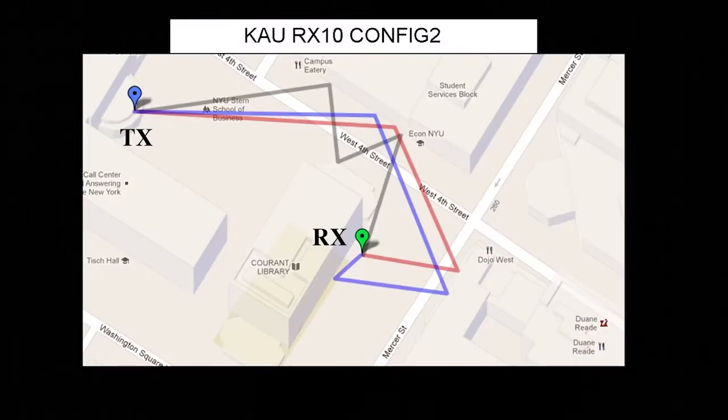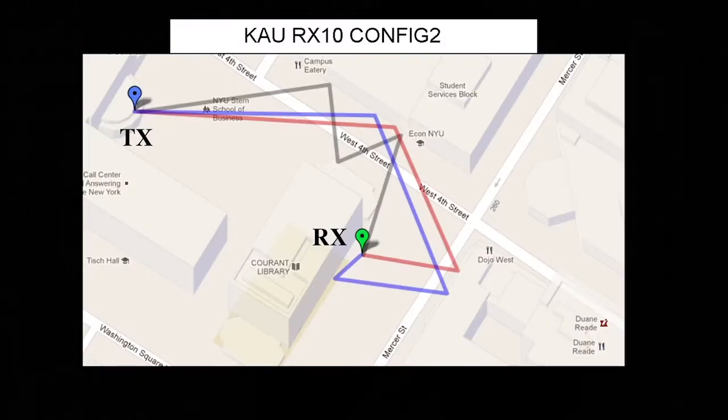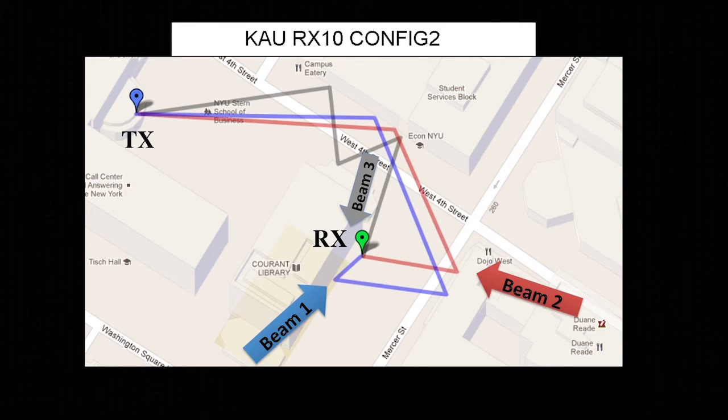Combining energy contained in different beams from different directions at the receiver can greatly improve signal quality and link budget. For example, using our measured data, we found that more than 7 dB per decade improvement in path loss can be achieved when we combine the three strongest powers coherently.